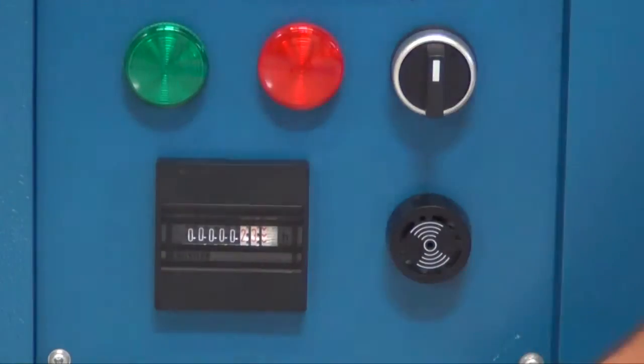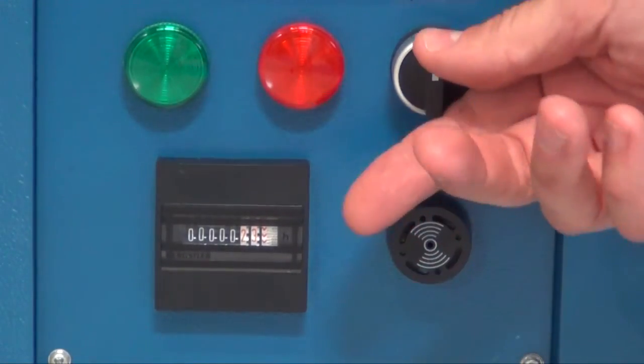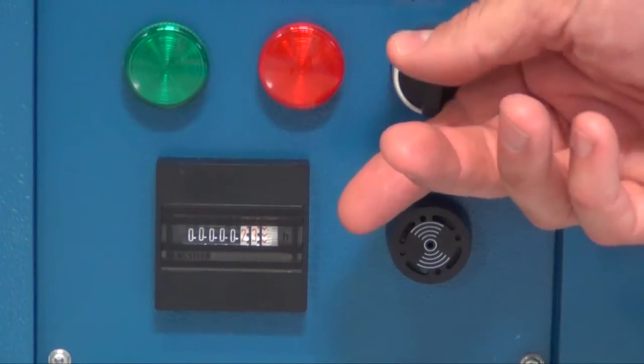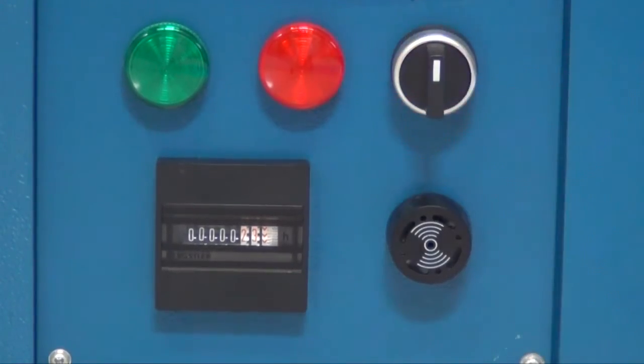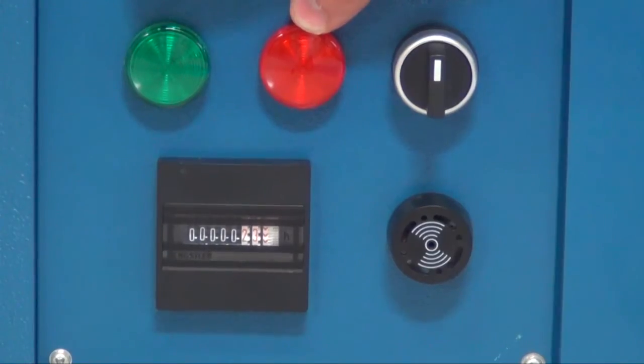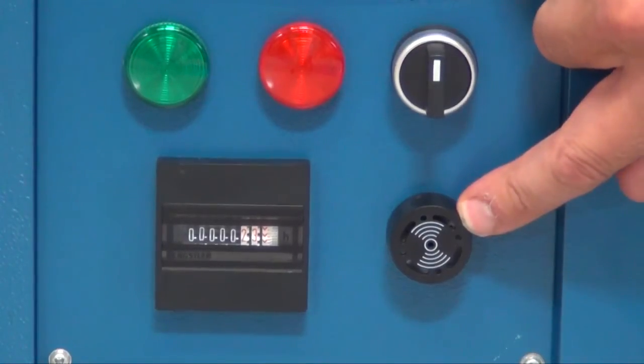You have a simple control panel on the filter. You switch on and off the filter by just turning this button. The green light will indicate when the filter is running. The red light is an alarm when it's time to clean or eventually replace the filter. At the same time as you have this red light, you will also have an acoustic alarm.